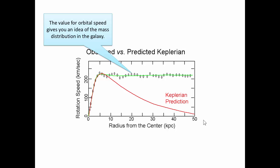Let's look at that in a little bit more detail. So the value for the orbital speed gives you an idea of the mass distribution in the galaxy. At any point you can basically find out what is the mass on the inside of that sphere where that star is. The velocity curve becomes flatter outside the center halo. That's a key point.